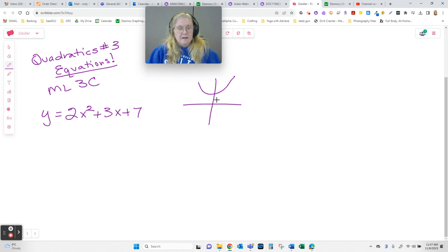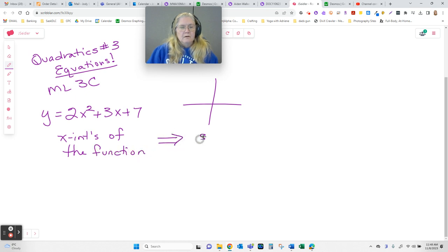It might be up here and have none. It might touch the x-axis at one point and have one. It might cross it twice and have two. Now here's what's special about those, because those x-intercepts of the function are what we call the solutions of the equation.